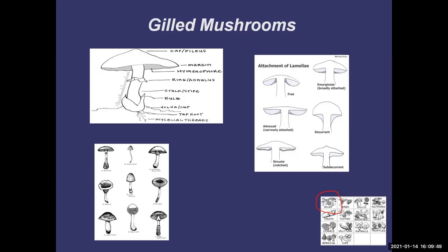Now we're moving on to gilled mushrooms. There are over 2,000 varieties of fungi in North America, so it's going to be impossible to memorize them all. But we can certainly learn the common ones, and the fun thing about this hobby is you can keep learning year after year — it's good for the brain.